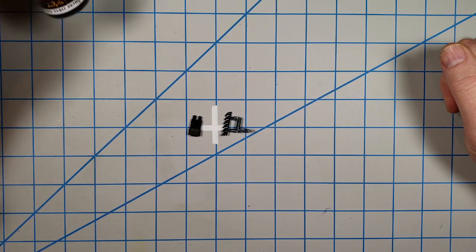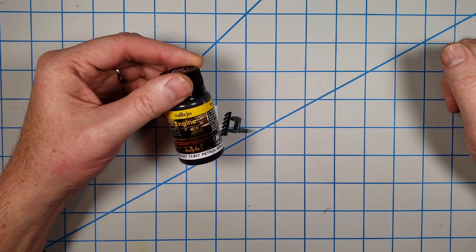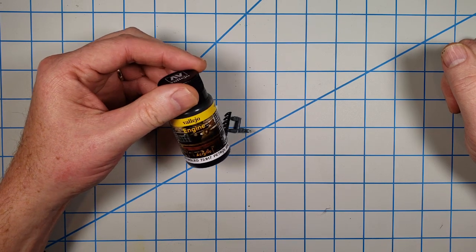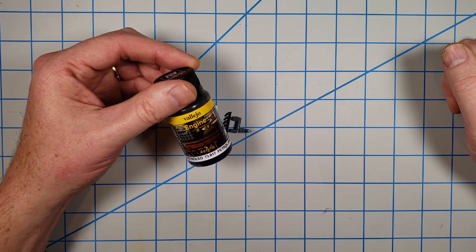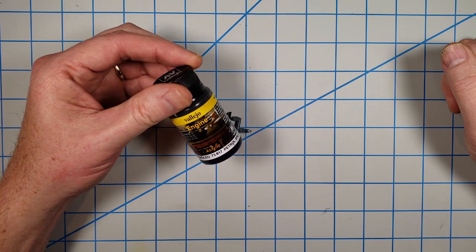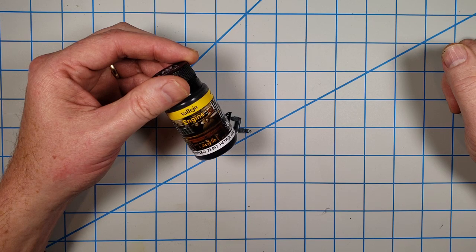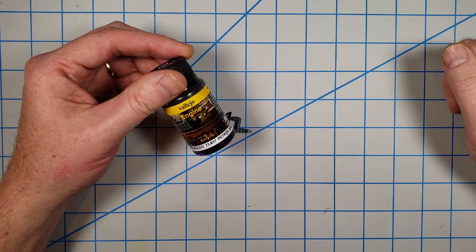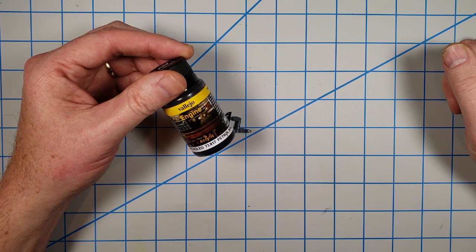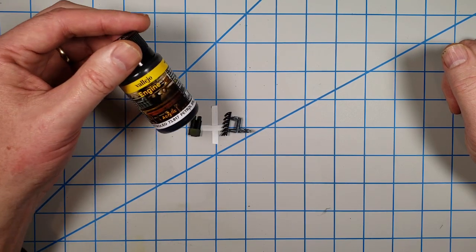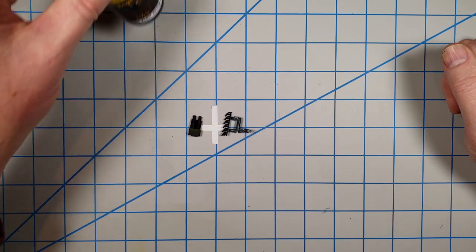Everything will get a wash of petrol spills from Vallejo Weathering Effects, but again, you don't need to feel like you've got to use this specifically. This is simply a dark wash. A dark wash from Army Painter, Citadel Nuln Oil, any kind of enamel wash, whatever you use. It could be oil, it could be anything. It just needs to be a dark wash.